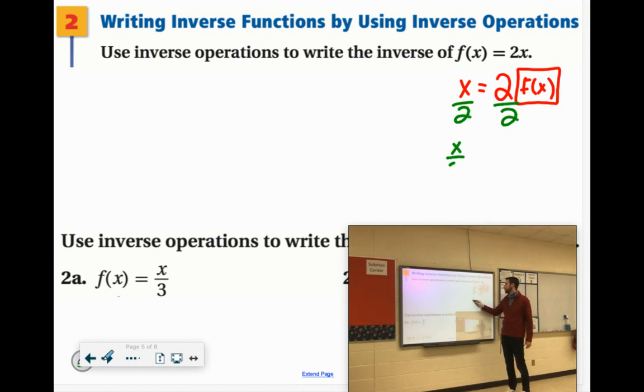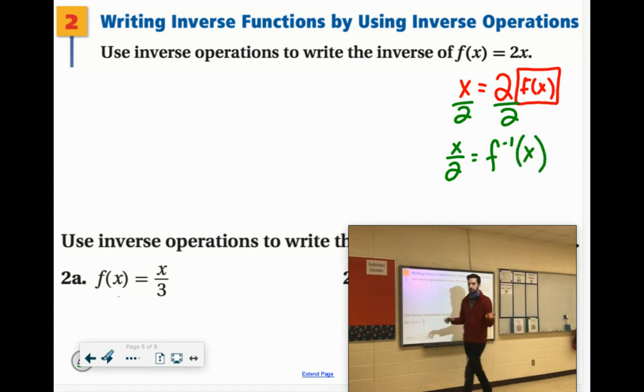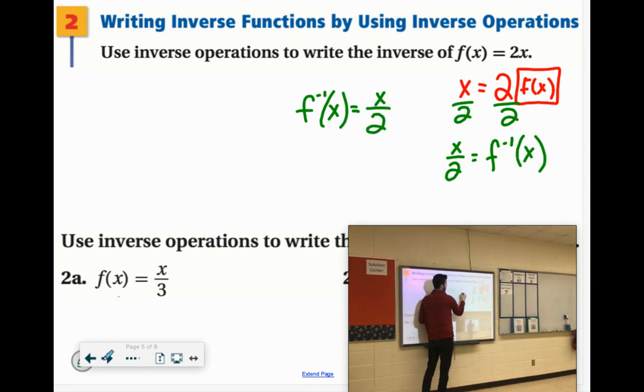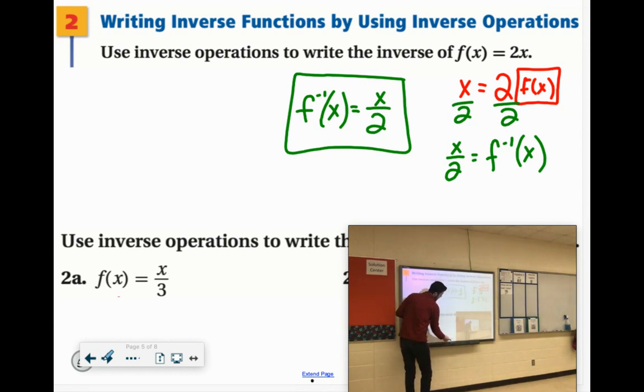So you'd have x over 2 equals f^(-1)(x). Now again, just write the f^(-1)(x) first. So f inverse of x equals x over 2. It just looks better that way than if you had the f inverse of x on the right side.